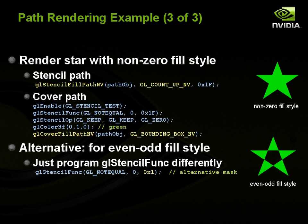For the even-odd fill style, it's the same as above, except we use a different stencil func command — we say not-equal but only test the least significant bit, setting the mask to 1 instead of 0x1F. We're really just looking at the even-odd status. Sure enough, that renders the star with the even-odd style.